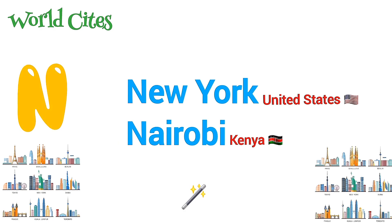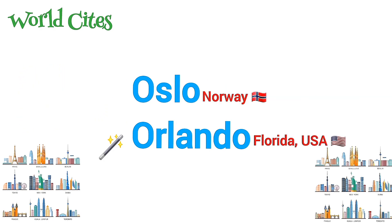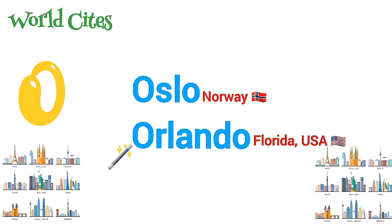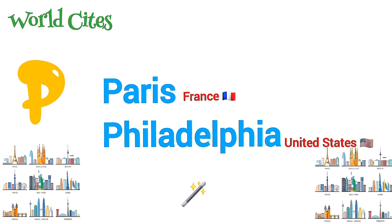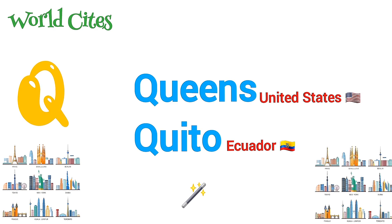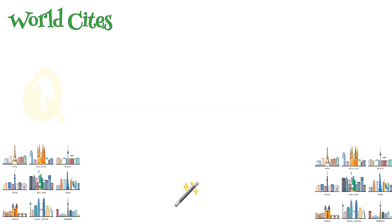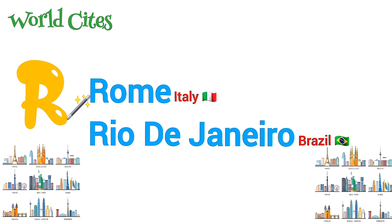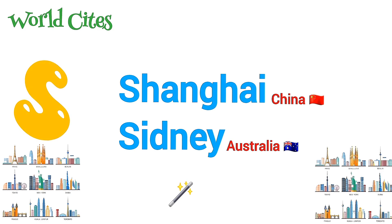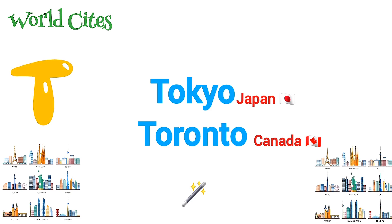N is for New York, Nairobi. O is for Oslo, Orlando. P is for Paris, Philadelphia. Q is for Queens, Quito. R is for Rome, Rio de Janeiro. S is for Shanghai, Sydney. T is for Tokyo, Toronto.